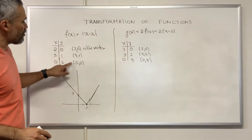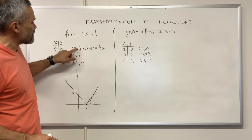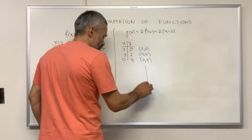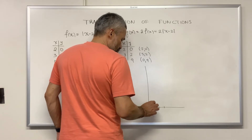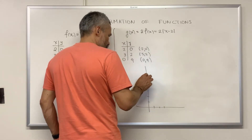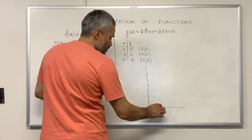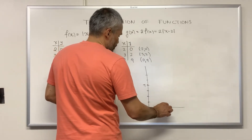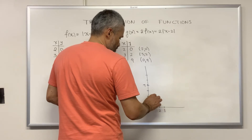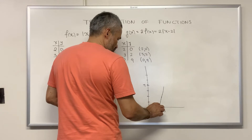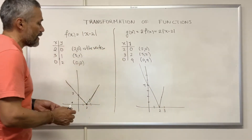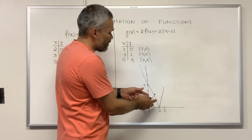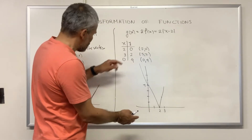We notice that the points are almost the same, but the second entry has been multiplied by 2. The graph has points (2, 0), (3, 2), and (0, 4). Every point's second entry has been multiplied by 2, and that means the final outcome is a vertical stretch of this graph.